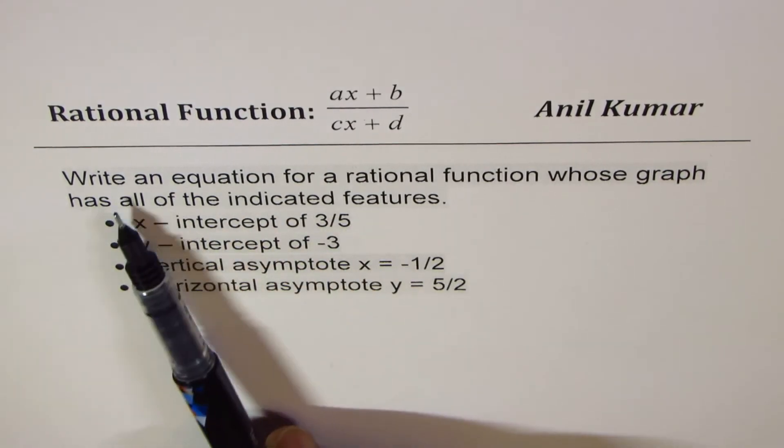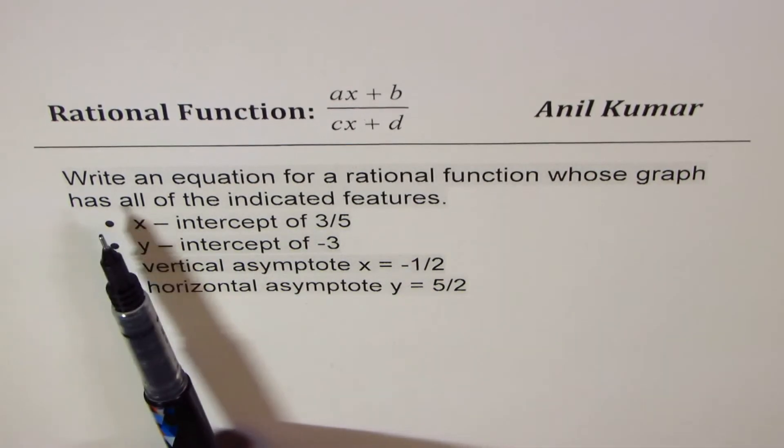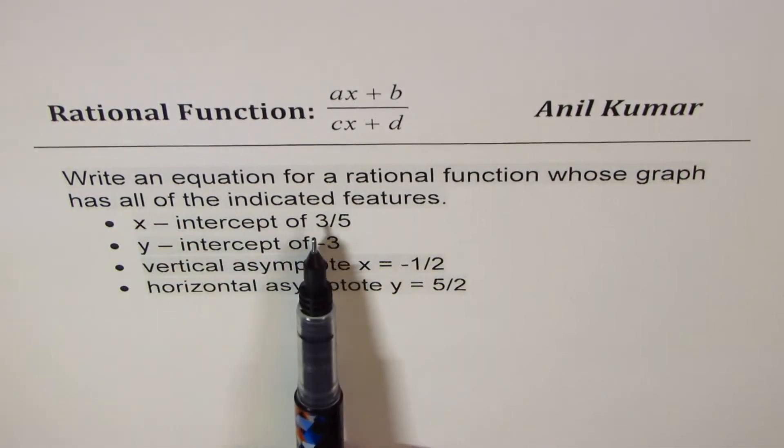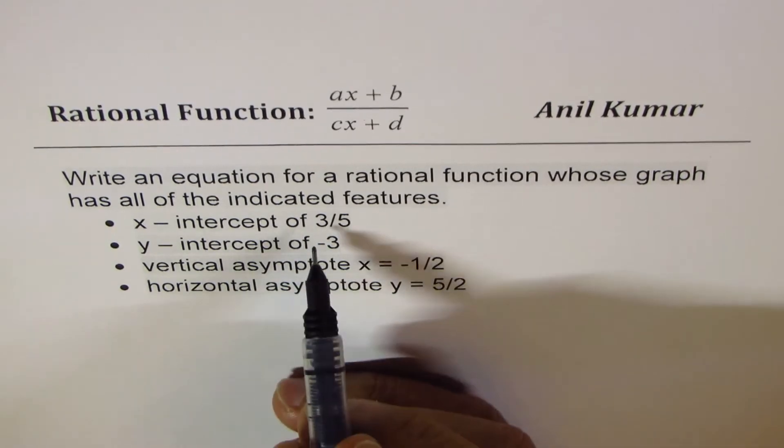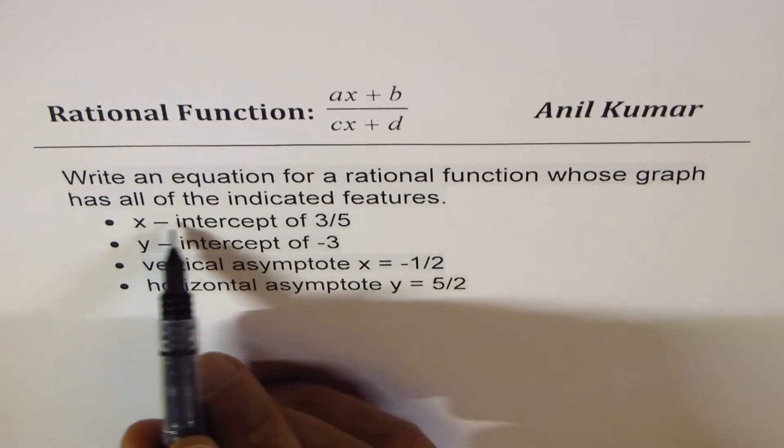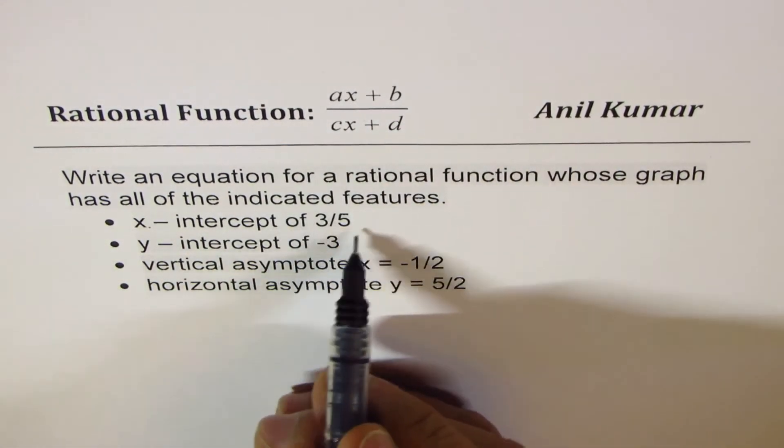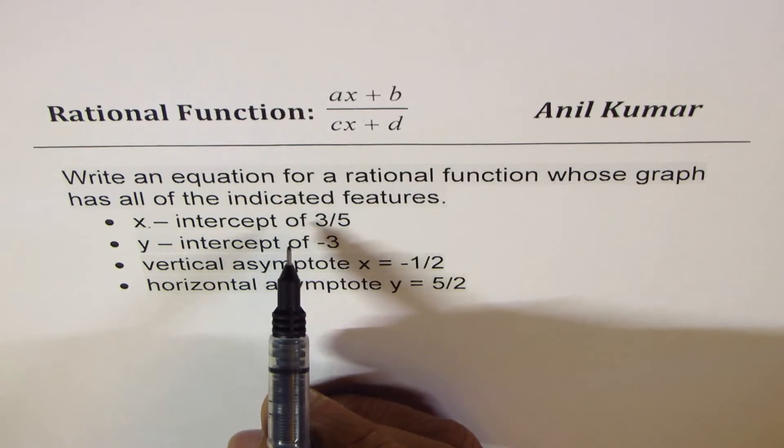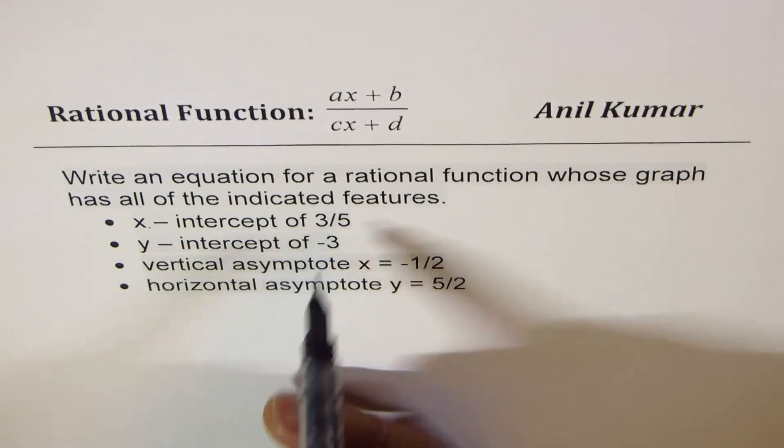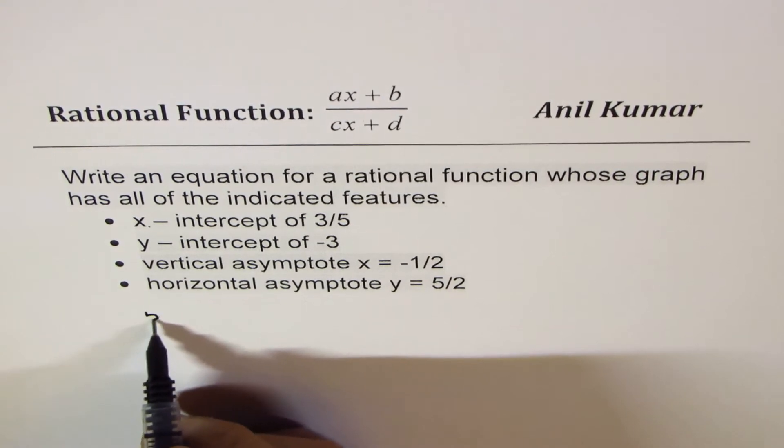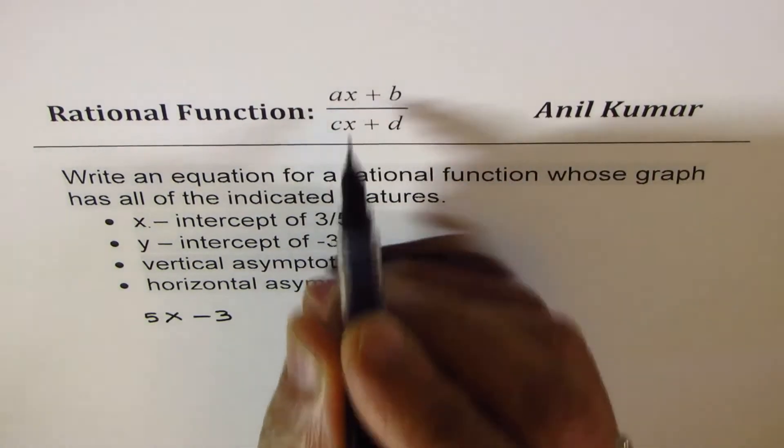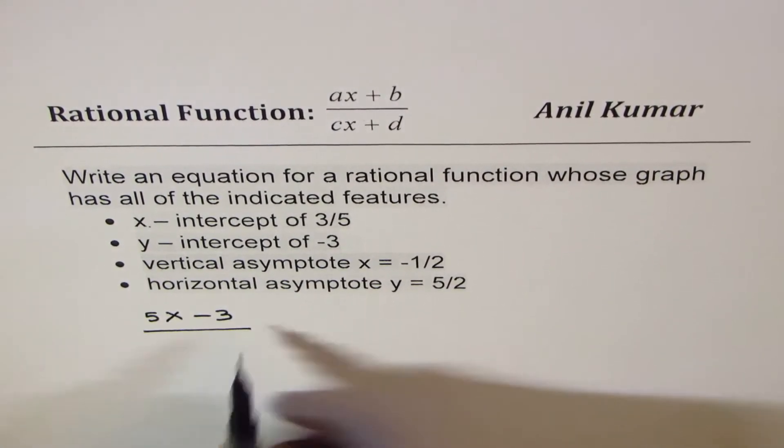Now write an equation for a rational function whose graph has all the indicated features. x intercept is 3 over 5. So when I say x intercept is 3 over 5, that means what is the numerator? When will the numerator be 0 and give you x intercept of 3 over 5? That means that the equation should be 5x minus 3. So that becomes the numerator.